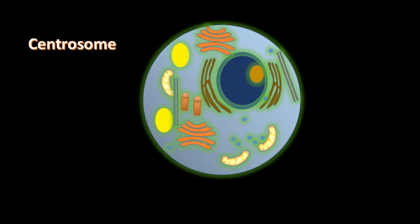Next is centrosome. Centrosome moves towards the opposite poles of the nucleus and produces spindle fibers, which pull the chromosomes and help in cell division.